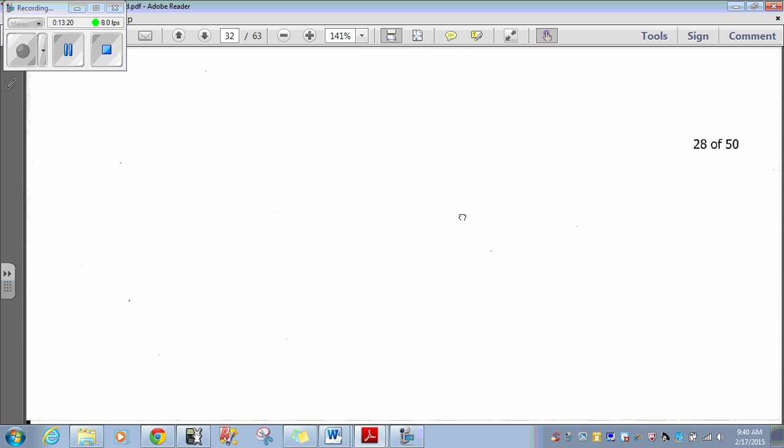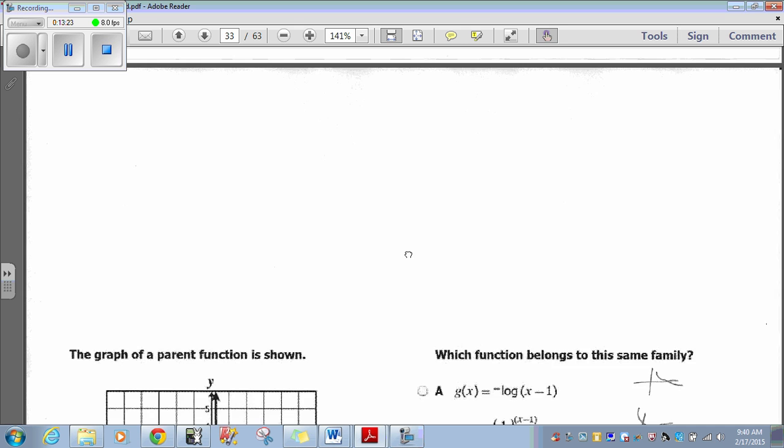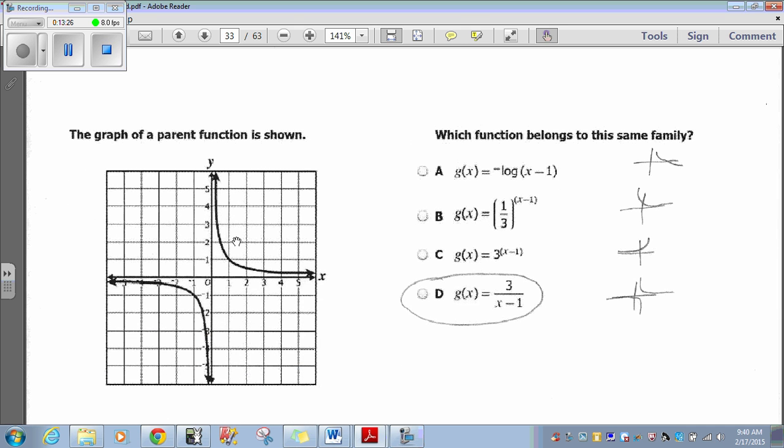Okay. Question 28. Let's go on to question 29. The graph of the parent function is shown. Which function belongs to the same family? Easiest thing to do? Graph them and see. Now, I graph this one here and look something like that. I graphed this one and looks like that. I graphed that one and looks like this. Choice D is the only one that looks like this. You can graph them on your... I'm not going to graph them now just to save time, but when you graph them on your calculator, choice D is the only one that looks like this. Choice D is your answer.